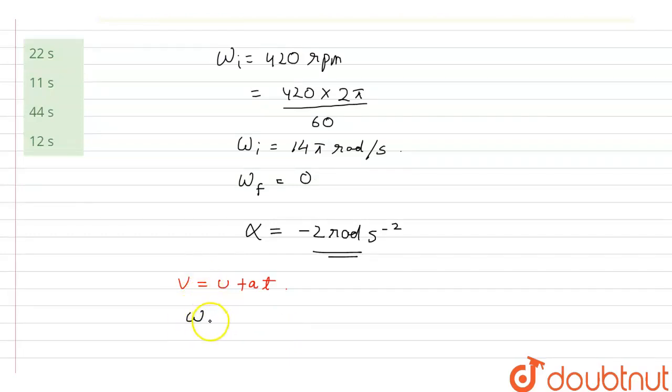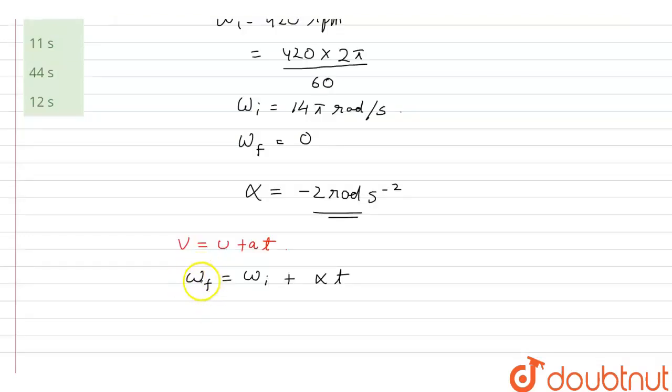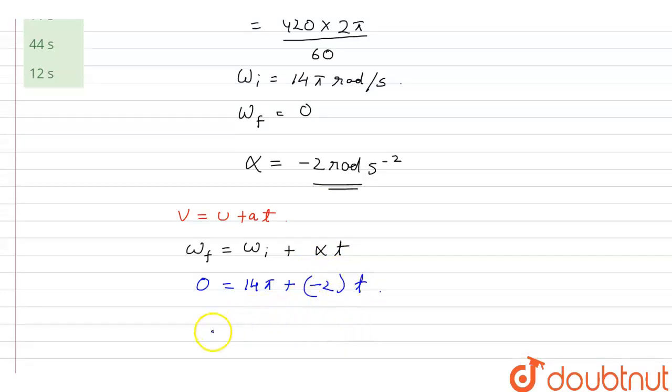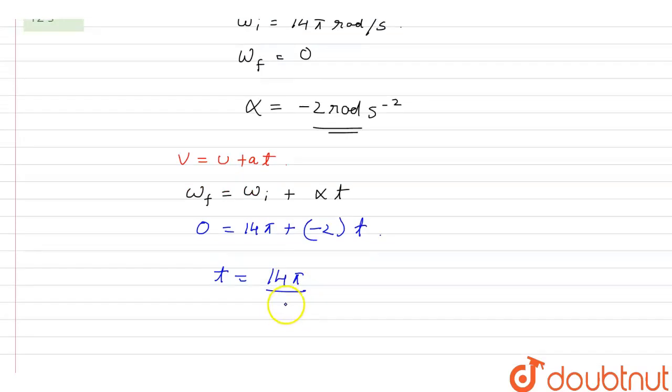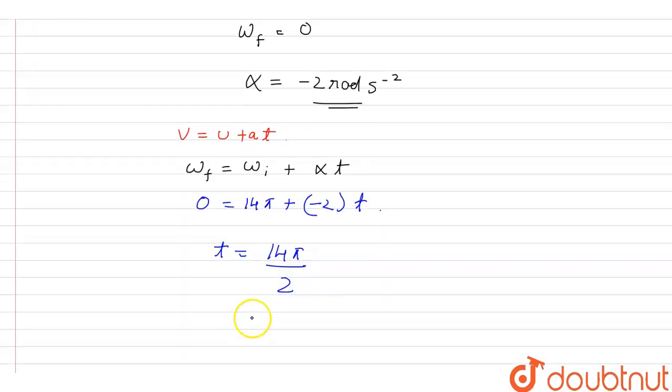In terms of angular velocity and angular acceleration this will be omega final equals omega initial plus alpha t. So omega final equals 0, omega initial is 14π plus alpha is minus 2 times t.